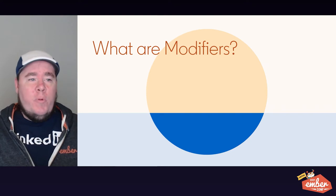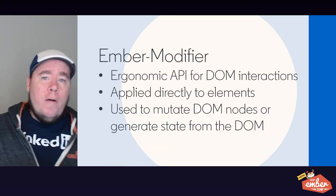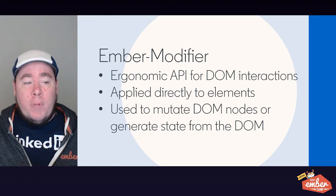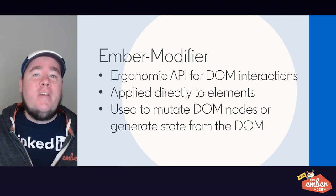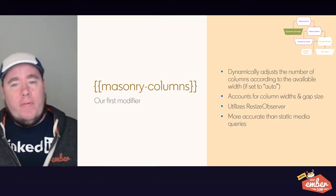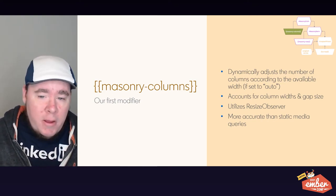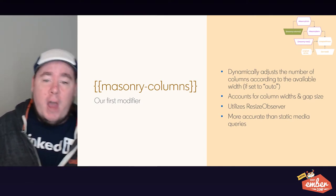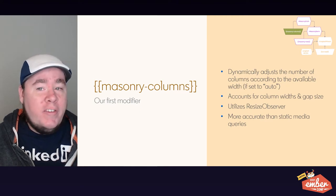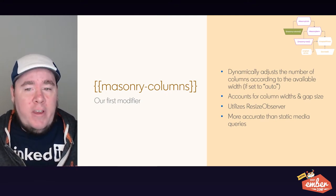Before diving into implementation, I want to briefly talk about the concept of modifiers. For this demo I'm using Ember Modifier, an add-on that provides an ergonomic API for DOM interactions in Ember apps. Modifiers can be applied directly to elements in the template and you can use them to mutate DOM nodes or generate state from the DOM. Our first modifier, masonry-columns, will dynamically adjust the number of columns in our grid, accounting for column width and gap size, and will update the number of columns automatically using ResizeObserver — a more accurate approach than static media queries.